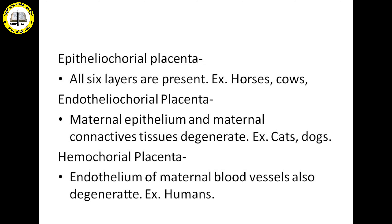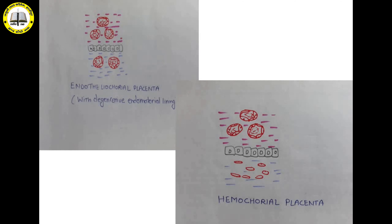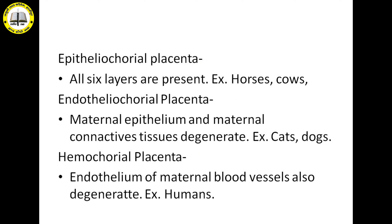In endotheliochorial type of placenta, the maternal epithelium and maternal connective tissues both become degenerated. The blood vessels remain intact, and the chorionic villi come into direct contact with blood vessels of the maternal side. This endotheliochorial type of placenta is present in cats and dogs.